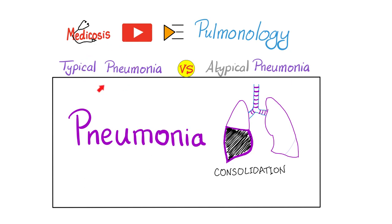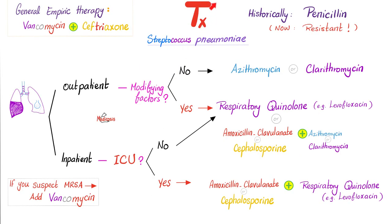Most patients will have lobar pneumonia, unless you're very young or very old, in which case you can get bronchopneumonia. To treat Streptococcal pneumoniae infection: historically it was penicillin, but today Streptococcus pneumoniae is resistant to penicillin, so we use something else — such as vancomycin and ceftriaxone together, the combo therapy.